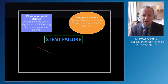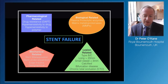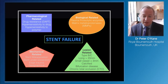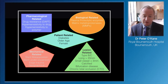More importantly, the mechanical-related and lesion-related factors are the ones we can influence in the cath lab - making sure our stents are well-opposed, properly expanded, avoiding edge trauma, avoiding geographical miss, and being wary of the lesions we're taking on. The patients at the centre of this - diabetic, older age, and female patients - are more at risk.